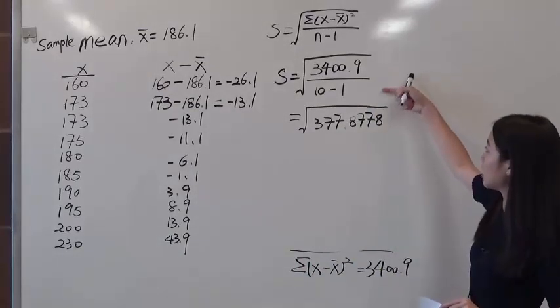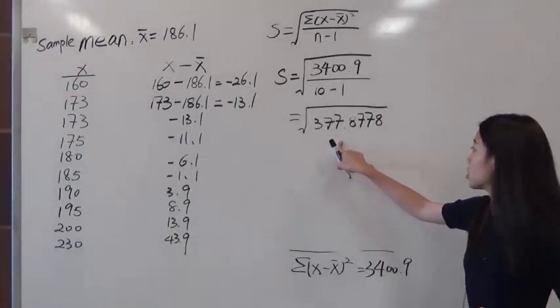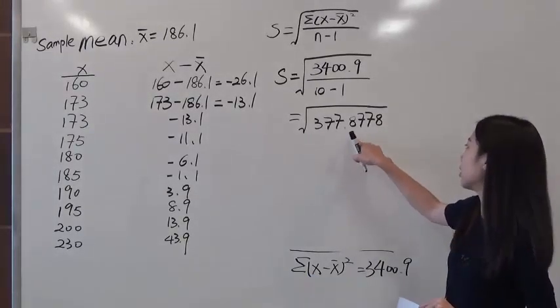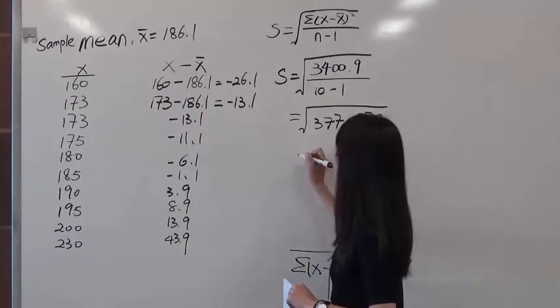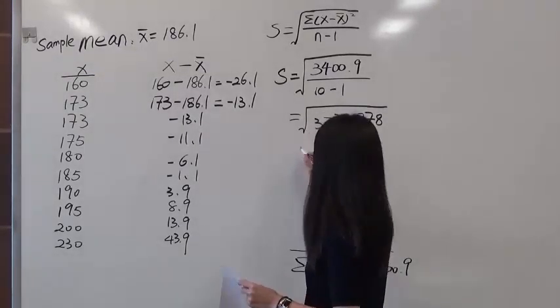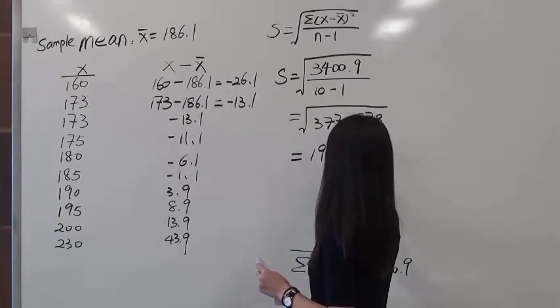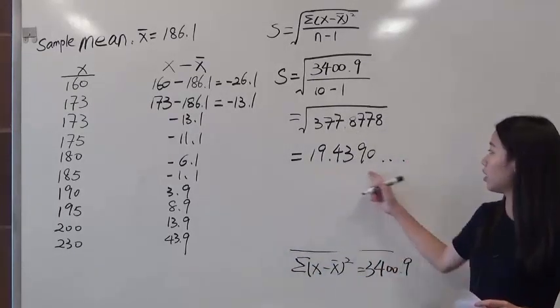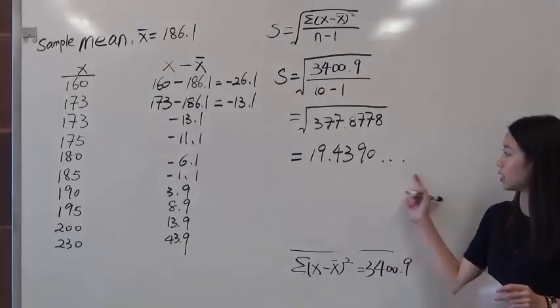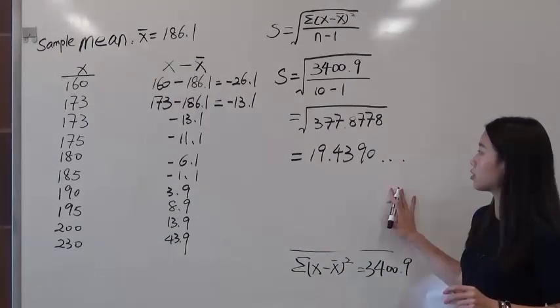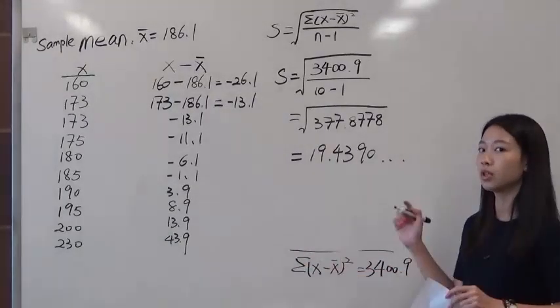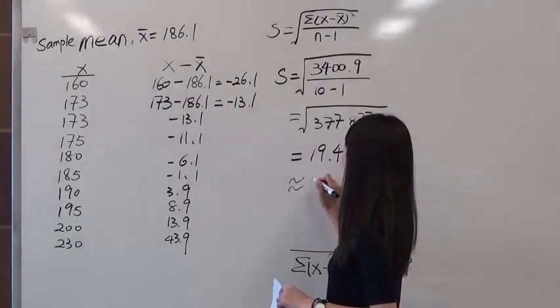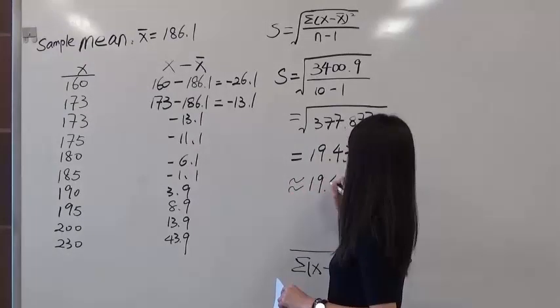At this time, once you finish the inside, you can start work on the square root. So square root of 377.8778, we will have the number roughly, it's 19.4390... So we will have a lot of different numbers at the end. However, since we start for the whole number, we will leave one decimal place for this answer. So our final answer will be rounded up to 19.4.